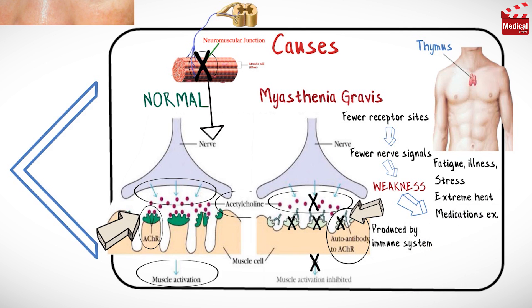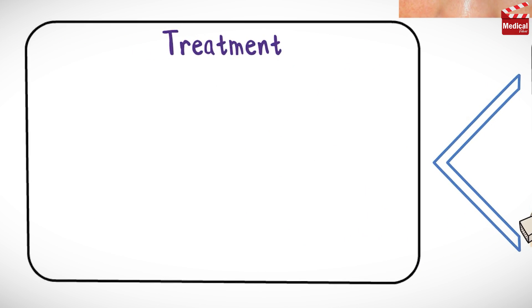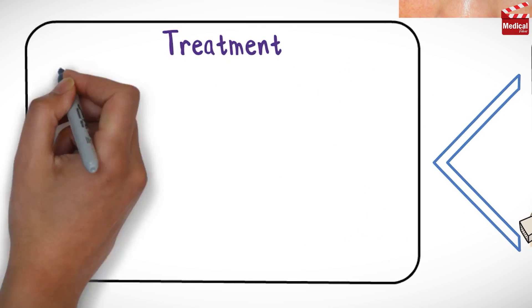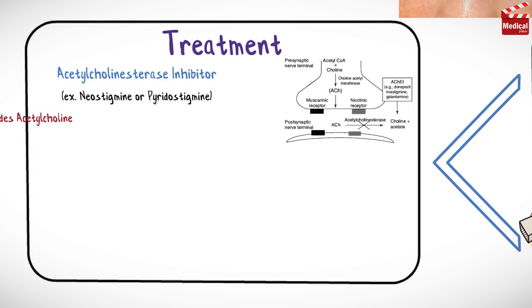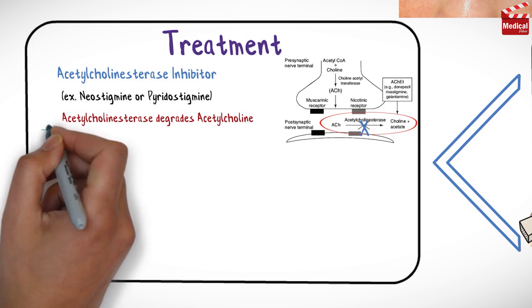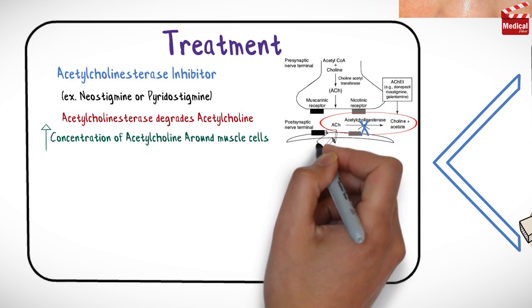Now let's talk about treatment that has been able to reduce mortality from myasthenia gravis. One type of medication is an acetylcholinesterase inhibitor such as neostigmine or pyridostigmine. Acetylcholinesterase degrades acetylcholine, so acetylcholinesterase inhibitors stop acetylcholinesterase from breaking down acetylcholine, which leads to increased concentration of acetylcholine around muscle cells.